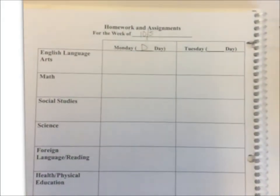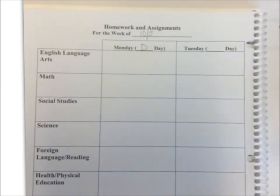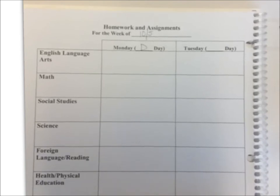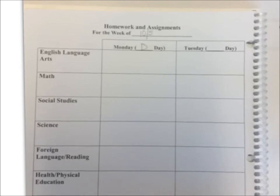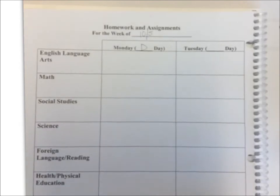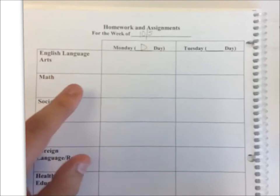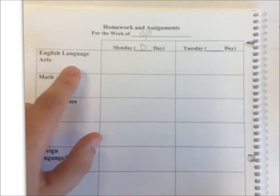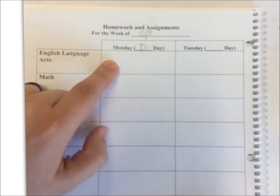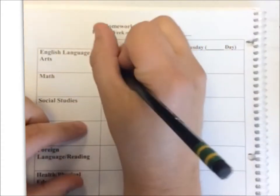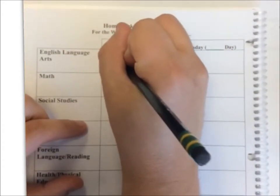Here's how to use your agenda. When you go to each class, you're going to pay attention to either what's written on the board or what the teacher tells you. If you go into ELA class and your ELA teacher tells you that you're going to have a paragraph of the week due on Wednesday, you would open up your agenda to the current day. Today is Monday and we are in ELA, so we're going to fill in this box. I'm going to write in what the homework is: I have a POW — paragraph of the week — that is due Wednesday.